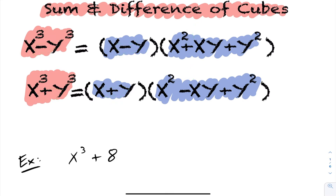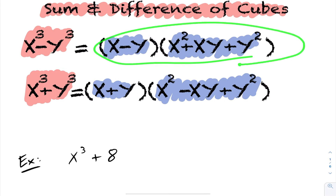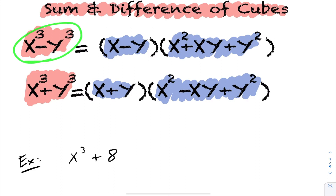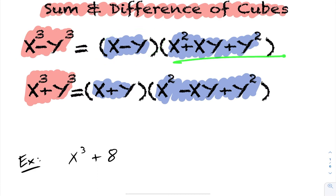If you can memorize that, it makes remembering the difference of cubes formula a little easier. If you want to see why this is true, you can expand everything out and simplify, and you'll see you get the answer on the left. Also, through long division, you can prove it — if you take x cubed minus y cubed and divide it by x minus y, you'll get this as your quotient.